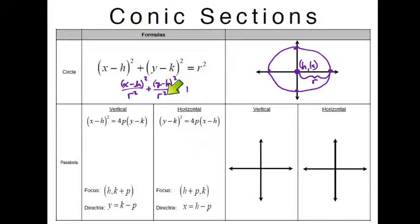Now if h and k were actually zero, then you would only have to write x² divided by r² plus y² divided by r² equals one. But again, you probably won't see the equation written in this form very often. You normally see it written in this form, so you just have to multiply both sides by r².